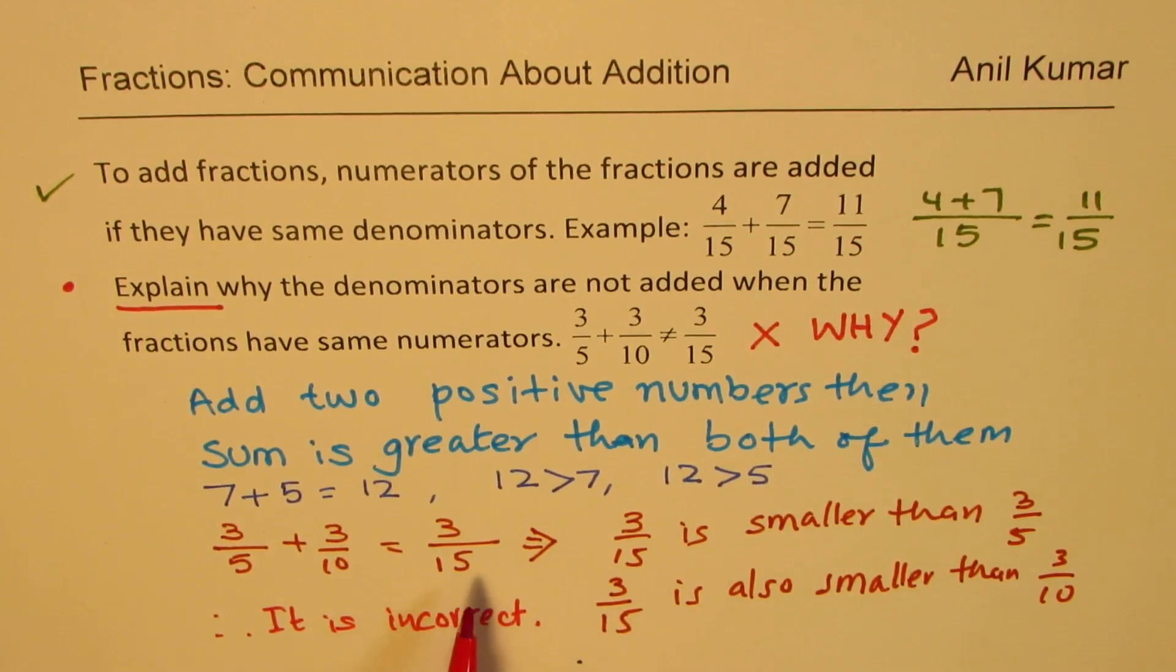So that is the idea. When you add, you expect a bigger number. But if you add the denominators, the number which you get will be 3 over 15 in this case, right? Whenever the denominator increases, the number value will decrease.